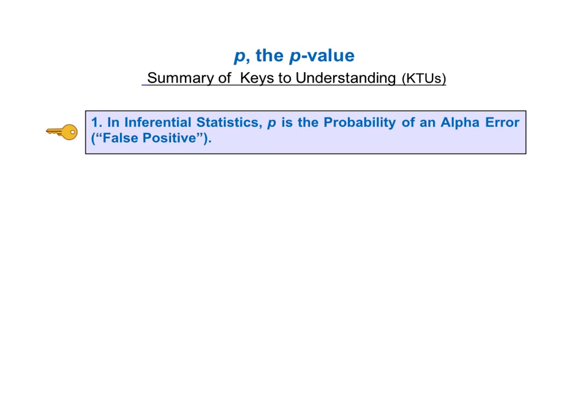As usual, in the book and in these videos, we will start with a list of keys to understanding, or KTUs, and then we will go into detailed explanations of each key. The first key to understanding is: in inferential statistics, P is the probability of an alpha error or false positive.